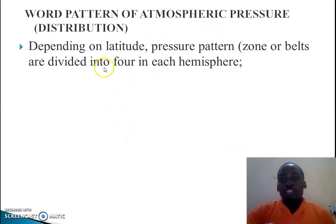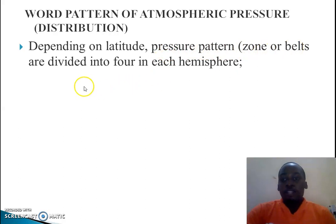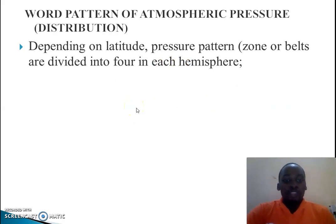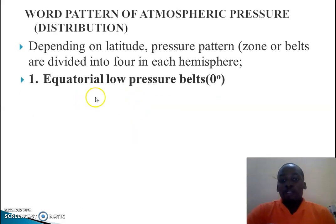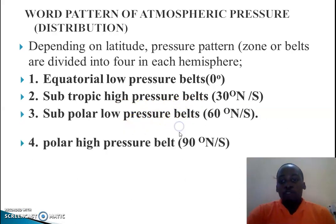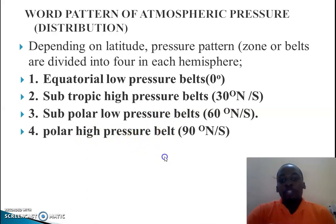Now, what is the pattern of atmospheric pressure distribution? Depending on latitude, pressure patterns or zones or belts are divided into four for each hemisphere. Atmospheric pressure is classified according to the latitudes. The four main belts are: the equatorial low-pressure belt at zero degrees, the sub-tropical high-pressure belt, the sub-polar low-pressure belt, and the polar high-pressure belt.